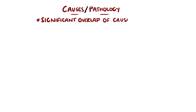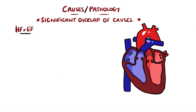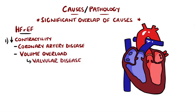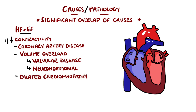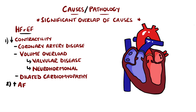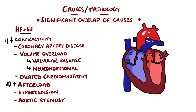The etiologies of both have significant overlap, but in particular, heart failure with a reduced ejection fraction has a close link with coronary artery disease, including myocardial infarction, as well as chronic volume overload coming from valvular diseases like mitral or aortic regurgitation, but also from the neurohormonal compensation via the renin-angiotensin-aldosterone system. Dilated cardiomyopathy is also included in these causes that all contribute to impaired contractility. Significantly increased afterload, which is the pressure against which the left ventricle must contract to eject blood, can also result in a reduced ejection fraction. Examples include severe aortic stenosis and uncontrolled hypertension.